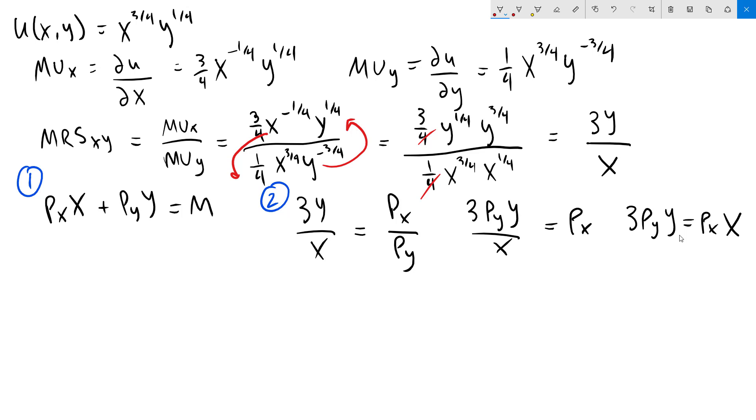I can now use substitution. Notice that we have a Px x here and a Px x over here. So anytime I see Px x in my budget line, I can substitute in 3 Py y. That's going to give me 3 Py y plus Py y equals m. I can combine terms to get 4 Py y equals m. Divide both sides by 4 Py, and that'll give me y equals m over 4 Py. That is my demand function for y.